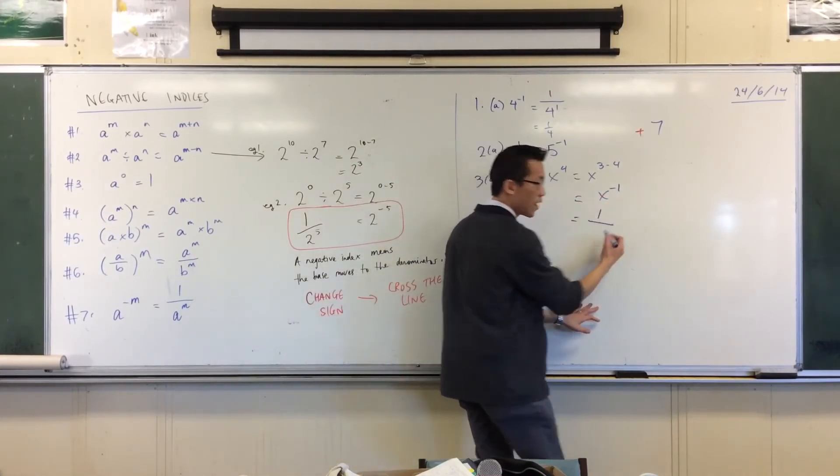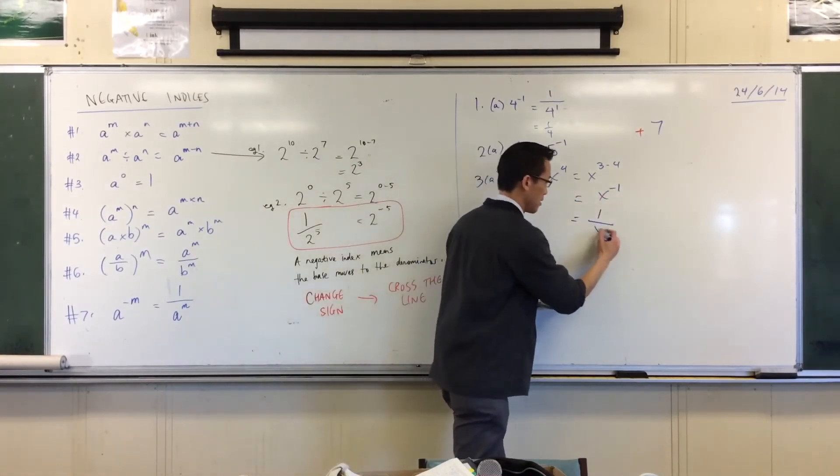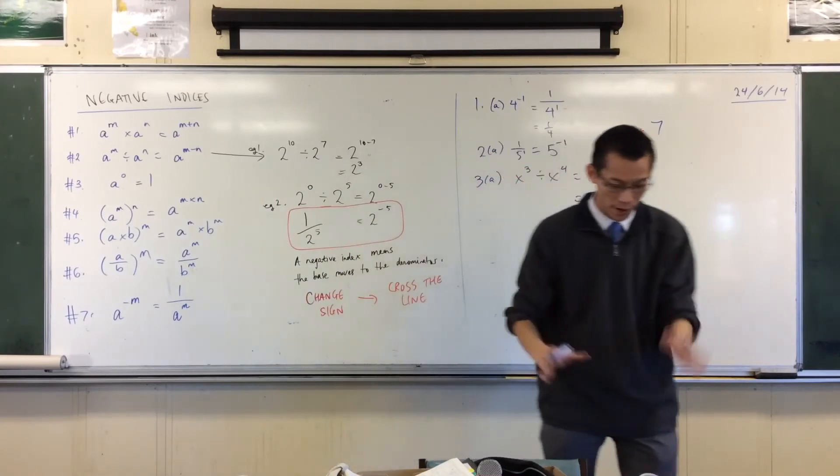So that's going to be 1 over, and it's just x. That's it, that's the simplified form.